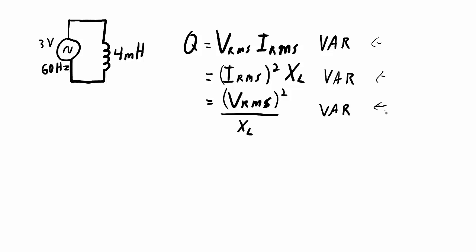You'll get a value that's in VAR, but one thing you should specify is that it is inductive reactive power, because capacitors also have reactive power, but their type of reactive power is the opposite of an inductor. So for this particular case, Q equals 3 over root 2 volts times the 1.99 amps over root 2, which works out to 2.99 VAR, and I need to indicate that it is inductive.